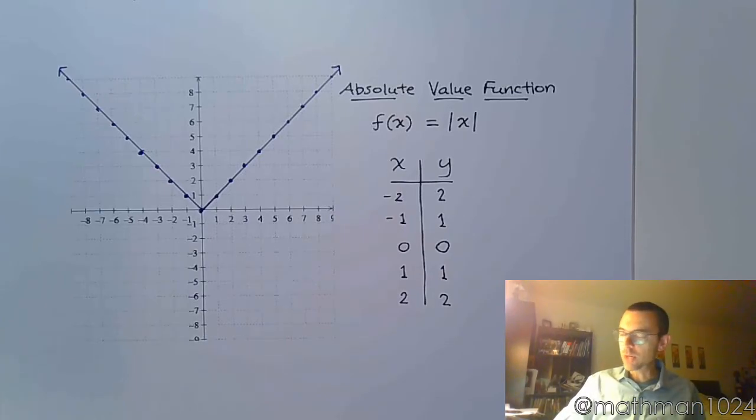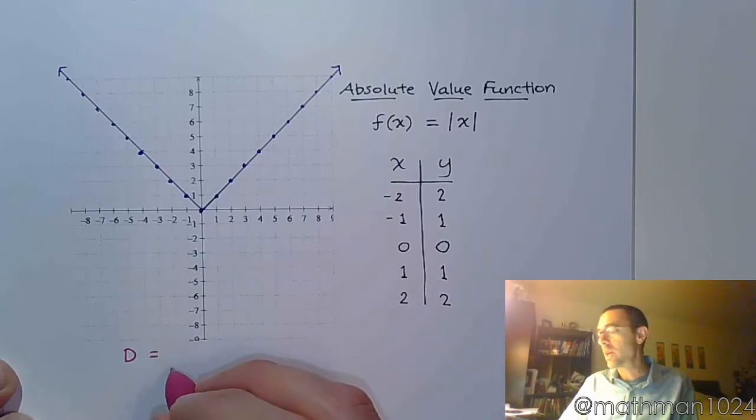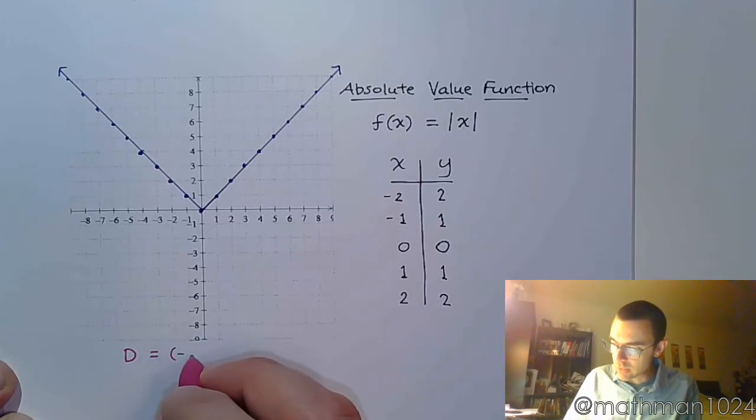All right, so let's see, what is my domain? Well, this guy goes all the way left, all the way right. I don't have any square roots. I don't have any fractions. So this should be all real numbers.